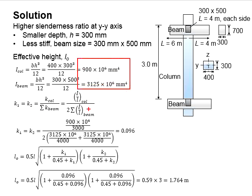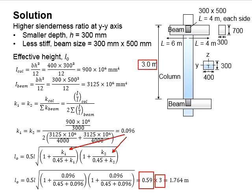Substitute the relevant values into the equations. The effective height of the column is 3 meters and the length of the beam for the incoming beam will be 4 meters for each side. k1 and k2 are found to be 0.096. Substitute the value into the equations. You will obtain the ratio equal to 0.59 to be multiplied with the effective height of the column. You will obtain 1.764 meters of L0.